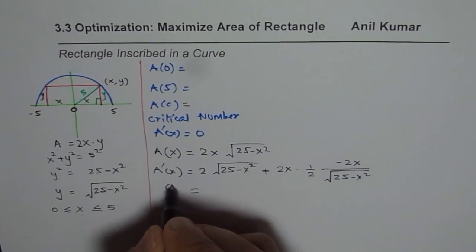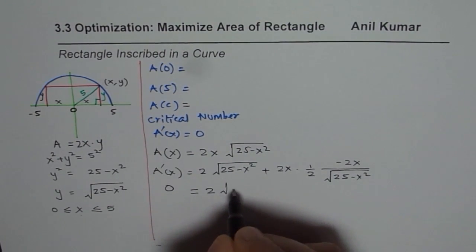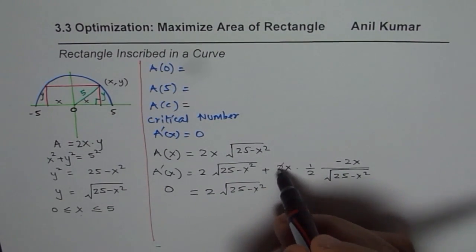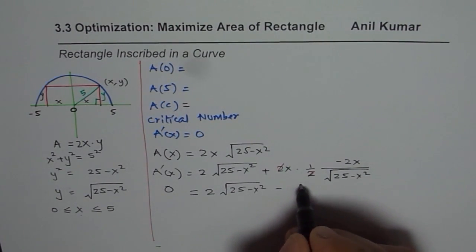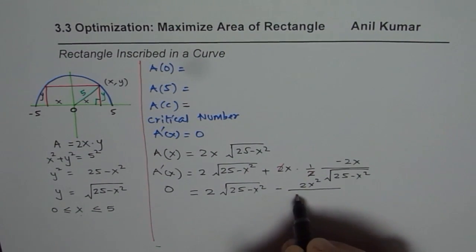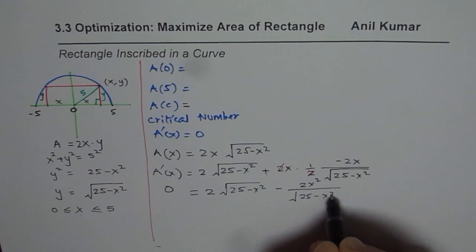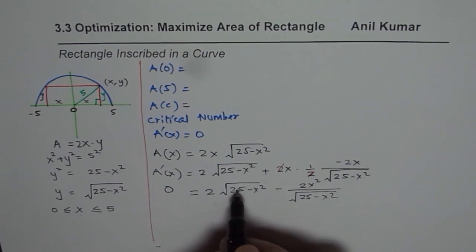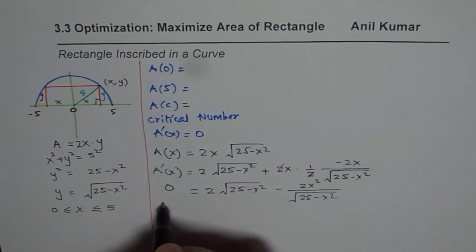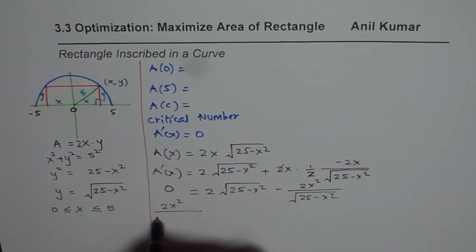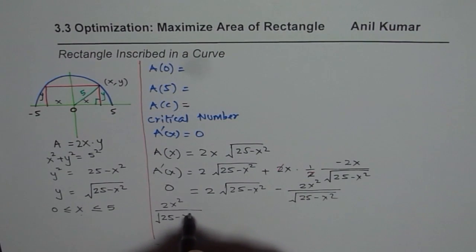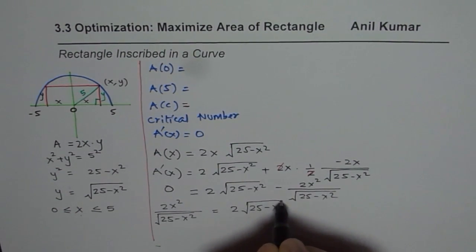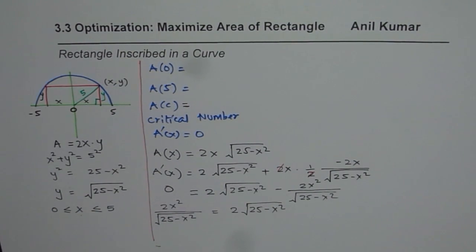Since we want the critical number, we equate this derivative to 0. So we have 2√(25 − x²) minus 2x²/√(25 − x²) = 0. The 2s cancel, giving us √(25 − x²) = x²/√(25 − x²). Equating and solving, we can cross multiply to get 2x² = 2(25 − x²).